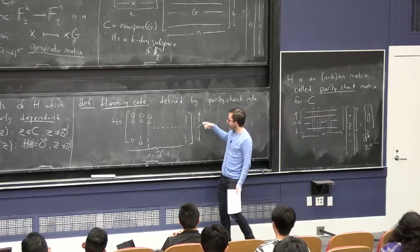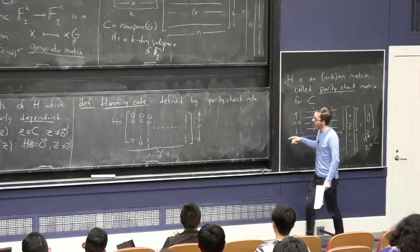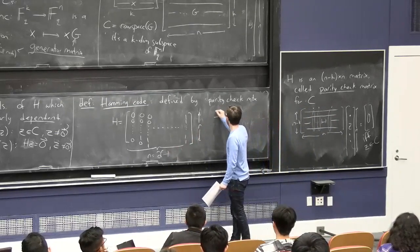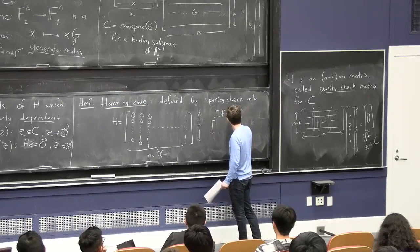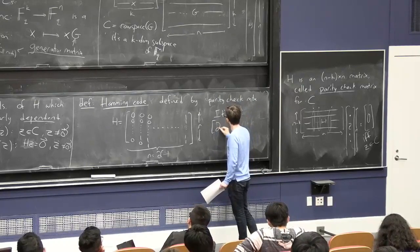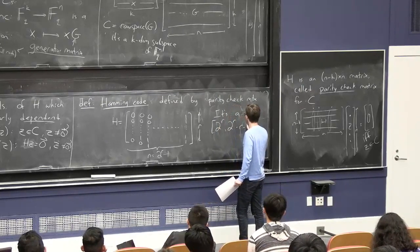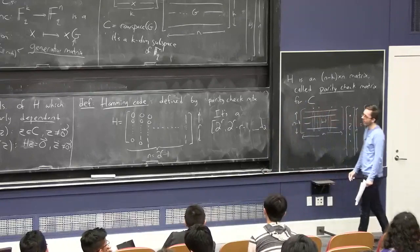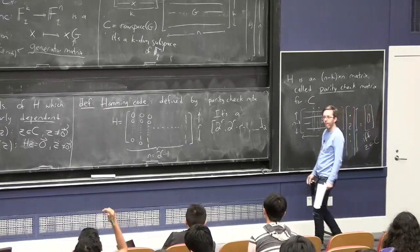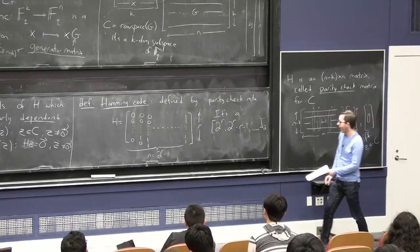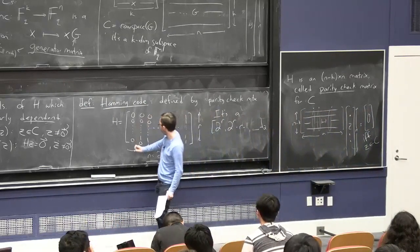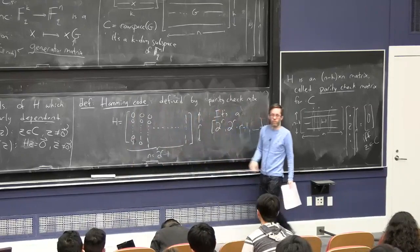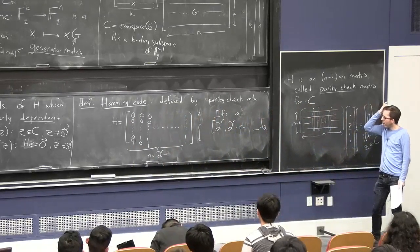So the K, since this height is N minus K, it means the K is 2 to the R minus 1 minus R. So this is 2 to the R, 2 to the R minus R minus 1. I'm putting all possible binary strings of length R except for the all zeroes string.